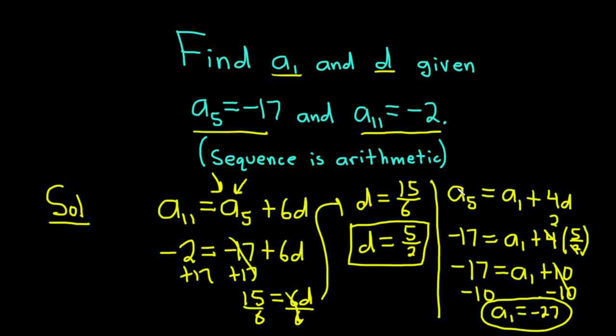By the way, you could have done it with a₁₁. You would get the same answer. Just in case you're curious, it would be a₁₁ equals a₁ plus how many d's do you need this time? 10 d's, because 11 minus 1 is 10. And then you go from there, and you should get the same answer for a₁. Anyways, I hope it's been helpful to someone out there in the world who is learning mathematics and studying arithmetic sequences. Until next time, good luck.